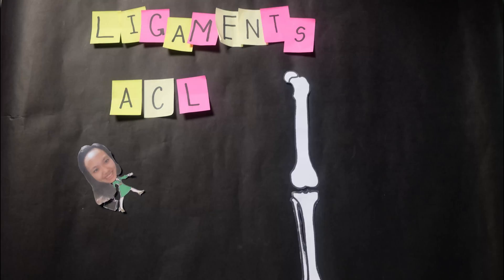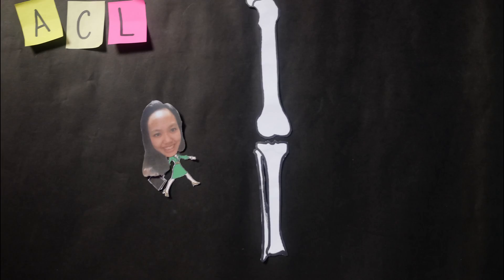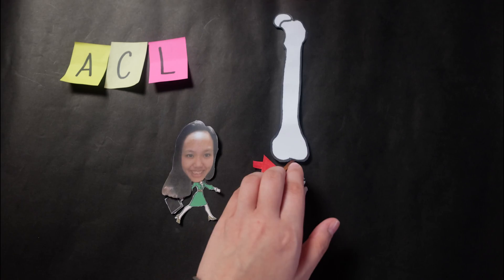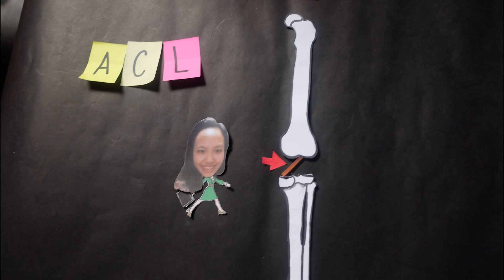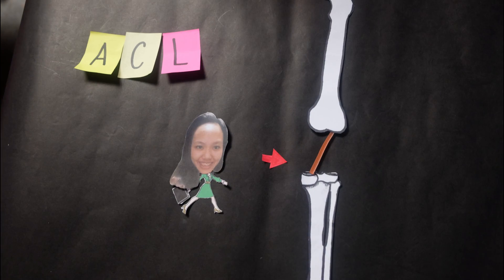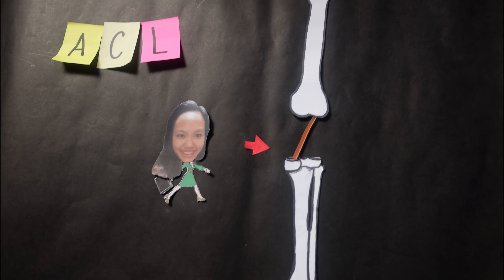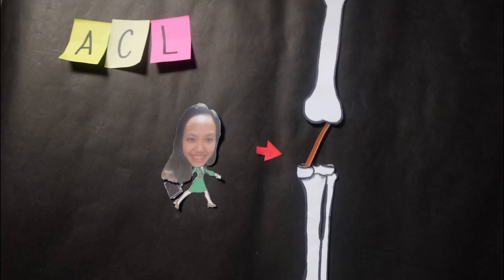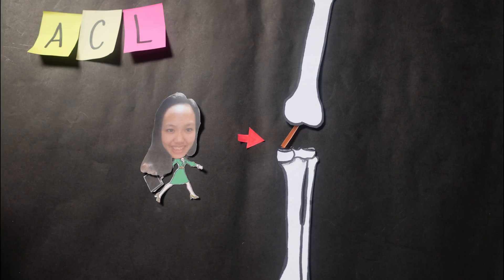The ACL restrains anterior tibial translation and prevents hyperextension. The ACL prevents the femur from sliding posteriorly on the tibia, or the tibia from sliding anteriorly on the femur.